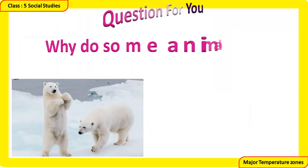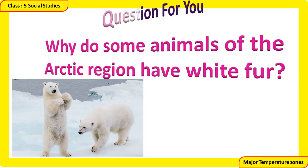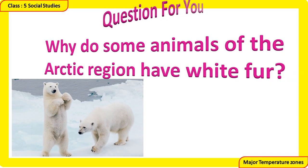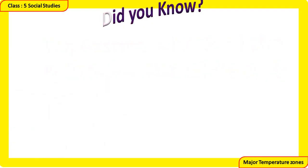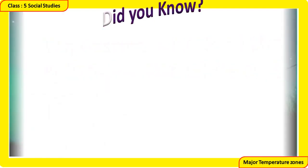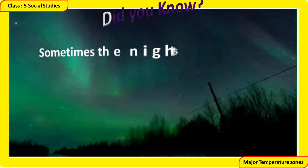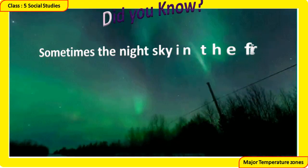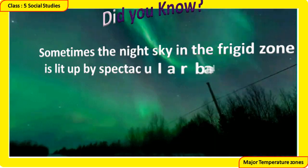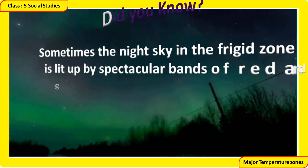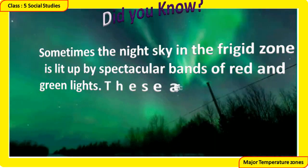Why do some animals of the Arctic region have white fur? Write your answer in the comment section. Did you know? Sometimes the night sky in the frigid zone is lit up by spectacular bands of red and green lights — these are called polar lights.